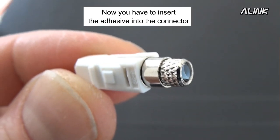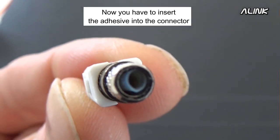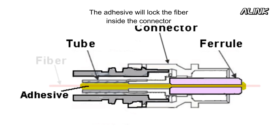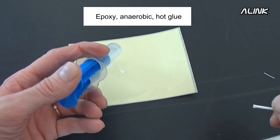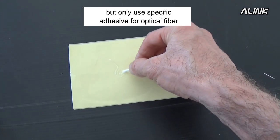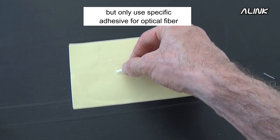Now you have to insert the adhesive into the connector. The adhesive will lock the fiber inside the connector. There are a lot of types of adhesives - epoxy, anaerobic, hot glue - but only use specific adhesive for optical fiber.